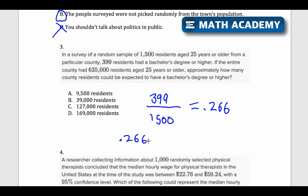I'm going to say that 26.6% or 0.266 times the whole group. That would be my estimate for how many people in the entire population has a bachelor's degree or higher. So let's do this multiplication 0.266 times 635,000. I get 168,910. And so the best estimate would be choice D there.